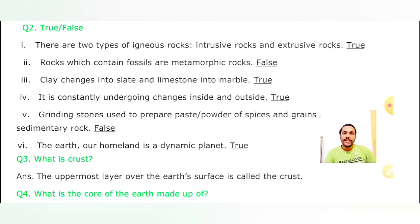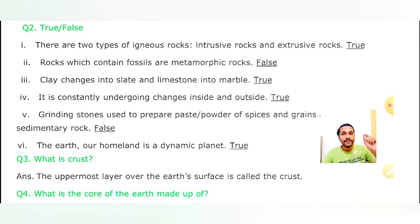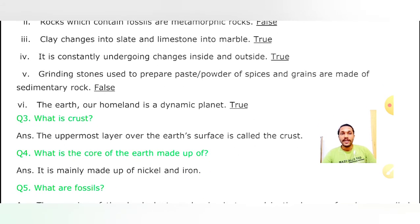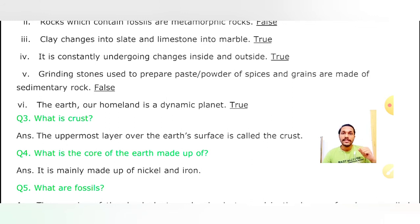Question: What is the core of the Earth made up of? Aapko pata hona chahiye - core kisse bana hua hai? Hamara core jo hai, woh nife se milkar bana hai. Andar magma surrounding karta rehta hai. Aur nife ka matlab hai nickel plus Ferus - Ferus is also known as iron. So core nickel and iron se milkar bana hai. Types of core kitne hote hain? Do hote hain - first is Inner Core and second is Outer Core.